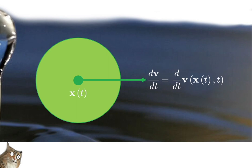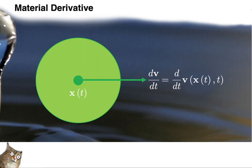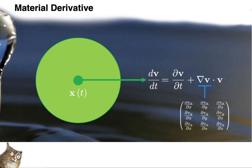So rather than parameterize things like velocity using a reference state coordinate, we associate these properties with the current position of our fluid blob, given by the function x. Our velocity at any point in space can instantaneously change in time due to applied forces, but also due to the motion of the fluid blob itself. This means we have to invoke a fancier time derivative, which we call the material derivative. The material derivative formula comes from applying the chain rule, storing the gradient of v in matrix form.